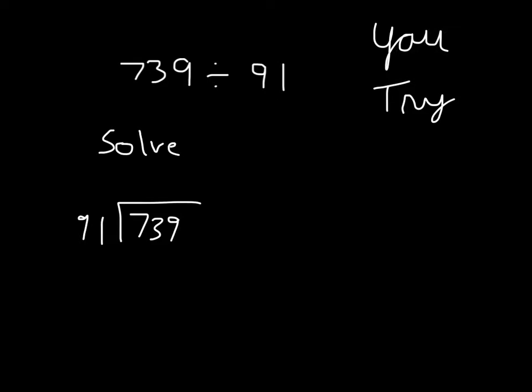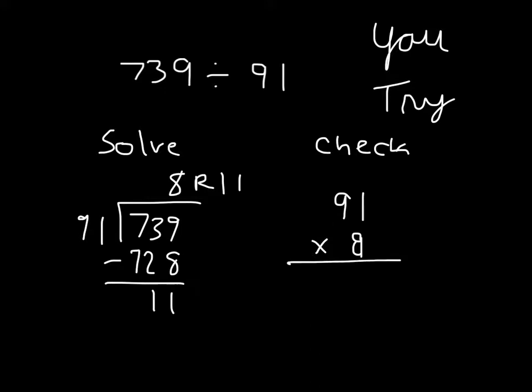How many whole times did you choose? Did you choose 8? 739 minus 728 would be 11. So our remainder would be 11. Here's our check. Take our divisor, which was 91. Multiply it by our answer there.